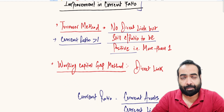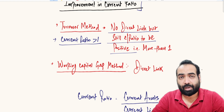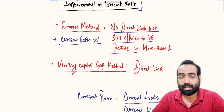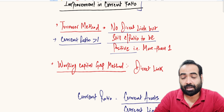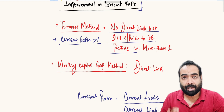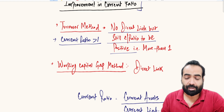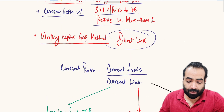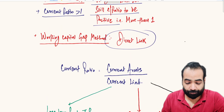Coming to the working capital gap method studied in the previous video: 75% of working capital gap is the final loan eligibility. Working capital gap is current assets minus current liabilities excluding bank finance, which means current assets should be greater than current liabilities — that itself says the current ratio should be more than one. Since in the working capital gap method we are dealing with current assets and current liabilities directly, the current ratio has direct implication over eligibility, and the same applies to MPBF Method 2 of the Tandon Committee.